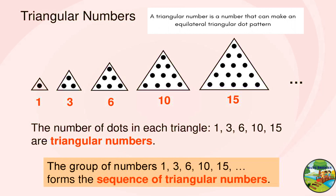A triangular number is a number that can make an equilateral triangular dot pattern. The number of dots in each triangle — 1, 3, 6, 10, 15 — are known as triangular numbers. Let's see in detail how these numbers have been formed.